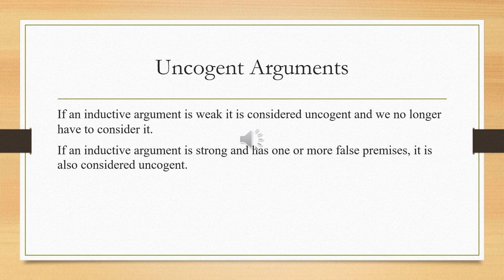Arguments can be uncogent. An inductive argument is automatically uncogent when it is weak — that's why it's a nice first test. If the argument turns out to be weak, we can ignore it. If it's strong, then we have to go on to the second test. A strong argument can still be uncogent if it has at least one false premise. If one of the premises is actually false — not hypothetically, but actually false — then even if the argument is strong, it will be uncogent and will fail the second test. Uncogent arguments are bad inductive arguments.